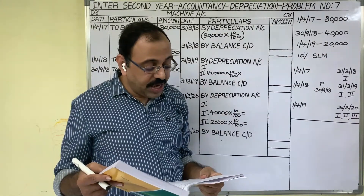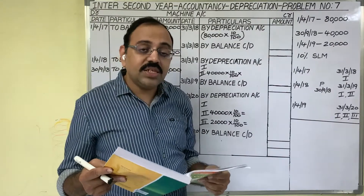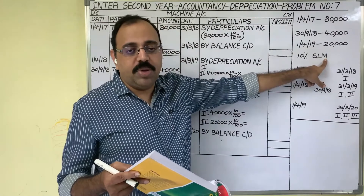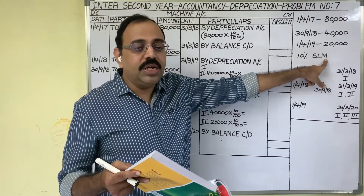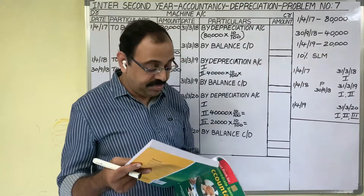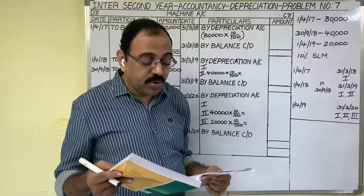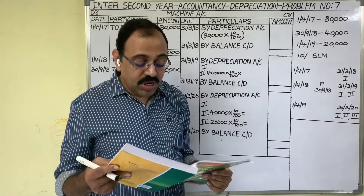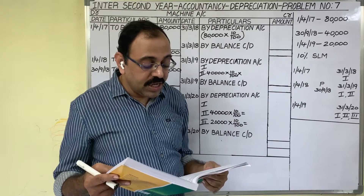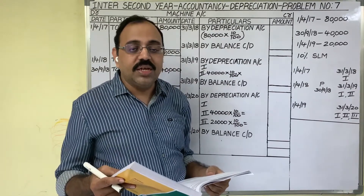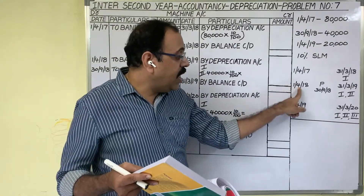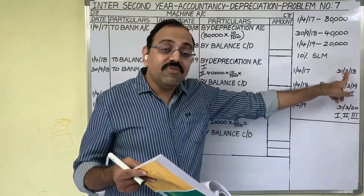Depreciation is charged at the rate of 10% under the Straight Line Method, also called the Fixed Installment Method or Original Cost Method. Every year we should provide 10% depreciation on these 3 assets. We need to show the machine account for 2018, 2019 and 2020, assuming accounts are closed on 31st March every year — they are following the financial year, which starts from 1st April and ends on 31st March.